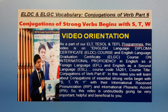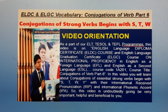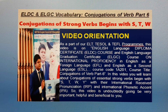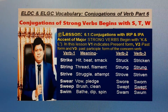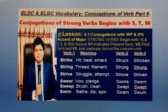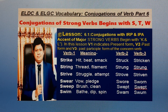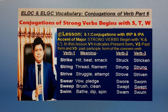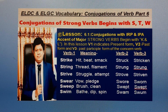This video is undoubtedly going to be very important, helpful and beneficial to you. Let's get started. Lesson 6.1: Conjugations with IRP and IPA — action of major strong verbs beginning with S. In this lesson, B1 indicates present form, B2 first form and B3 past participle form of the concerned verb.